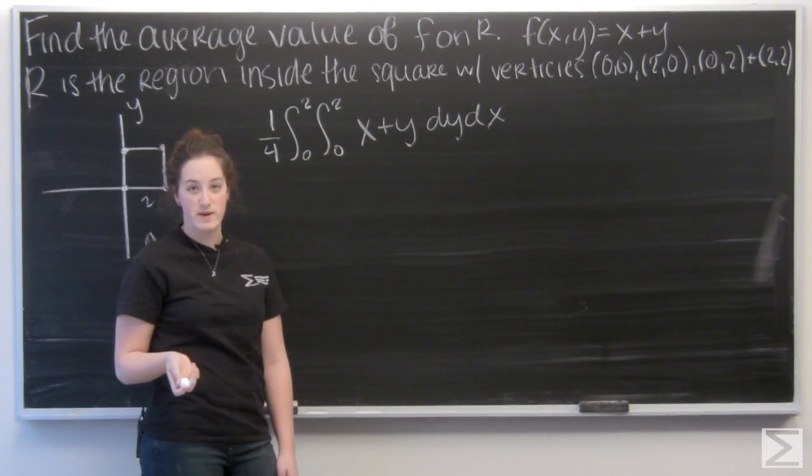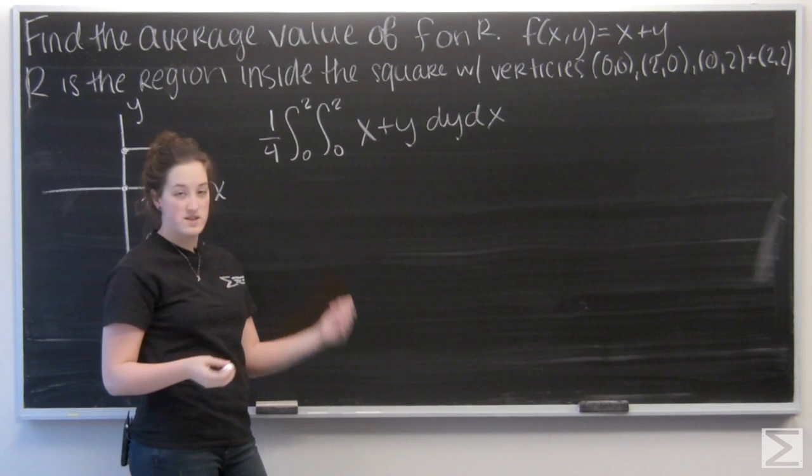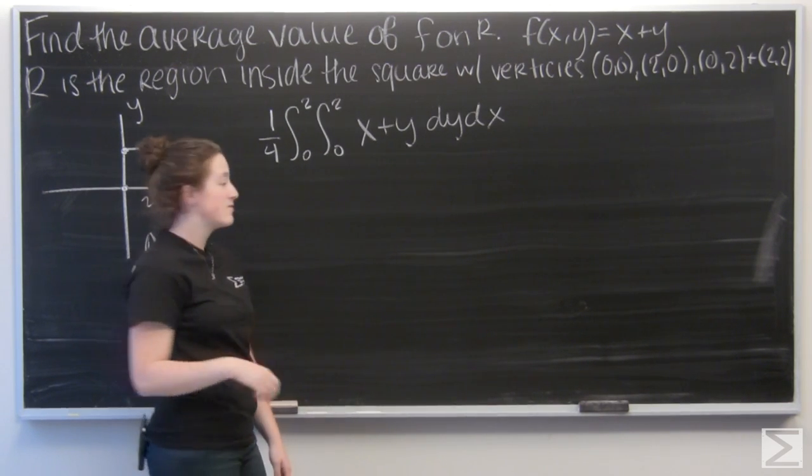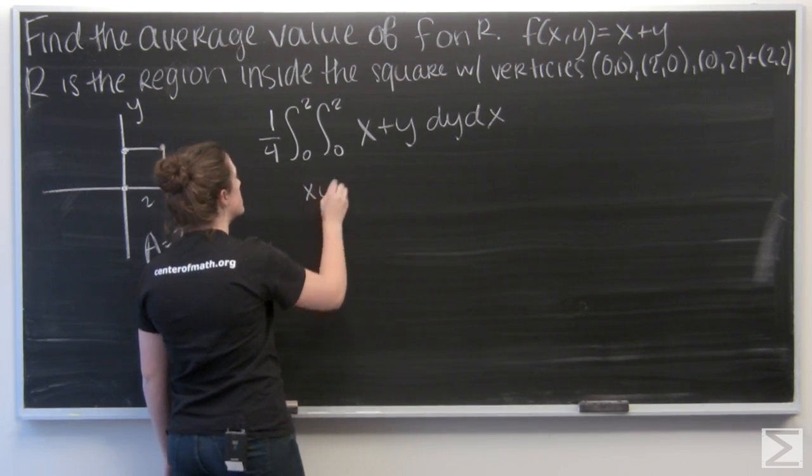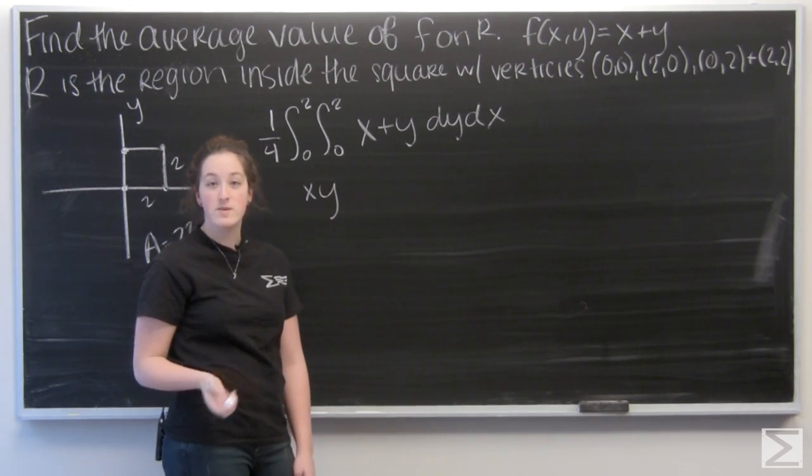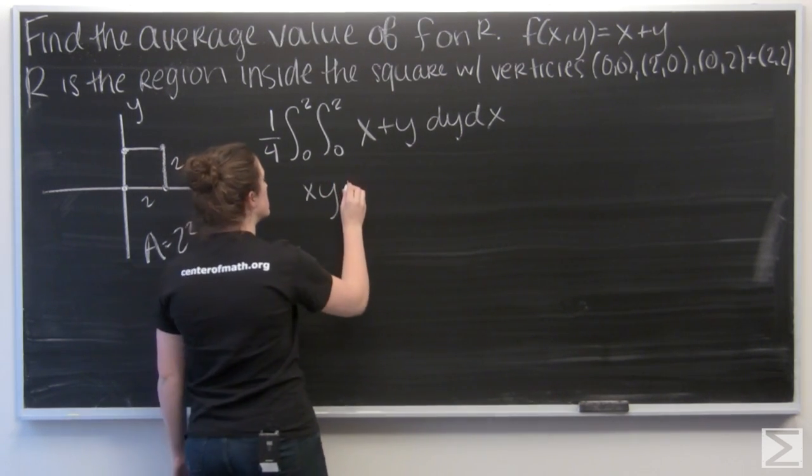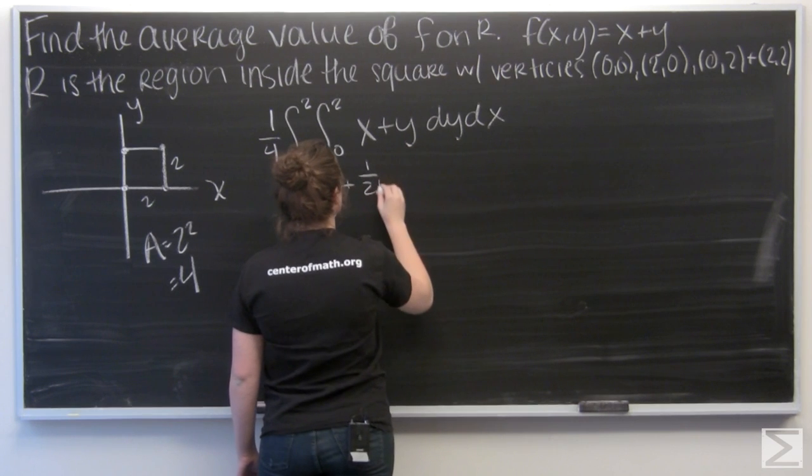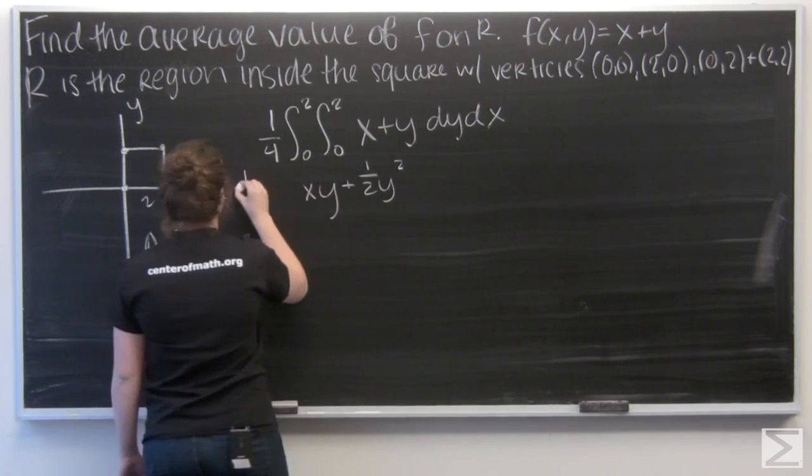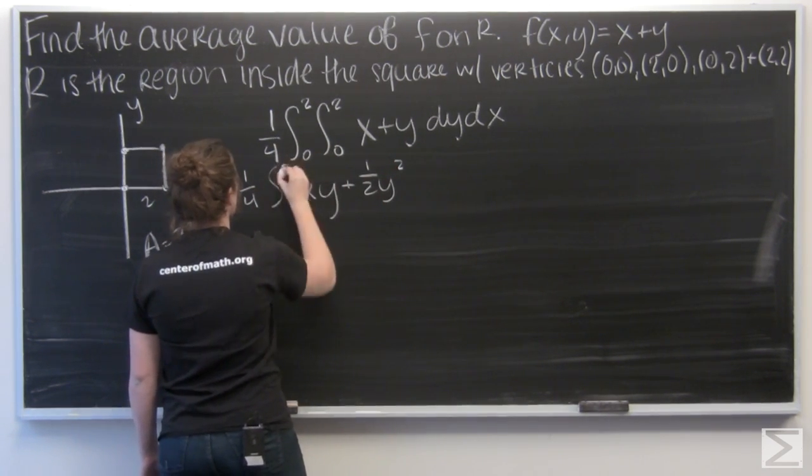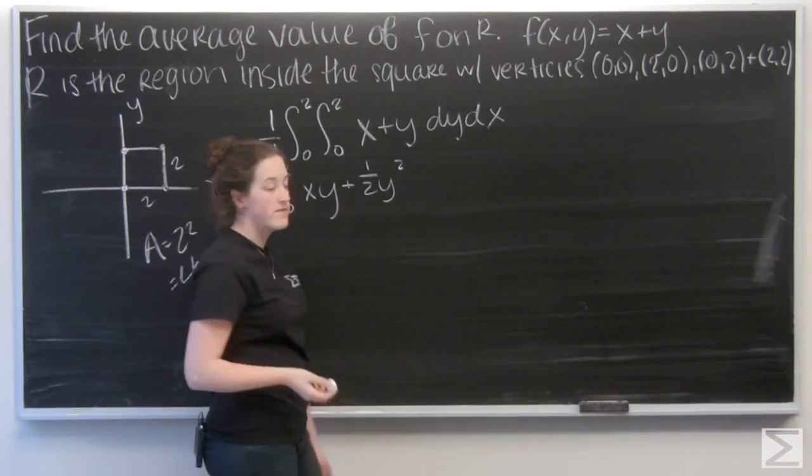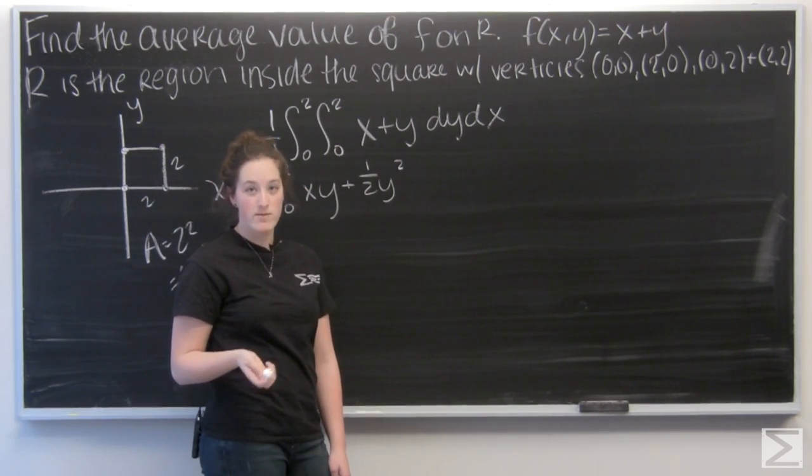And now I'm ready to integrate with respect to y. X is just a constant. So when I integrate that, I'm going to get xy. And the integral of y is going to be 1 half y squared. And then I want to evaluate that from y equals 0 to y equals 2.